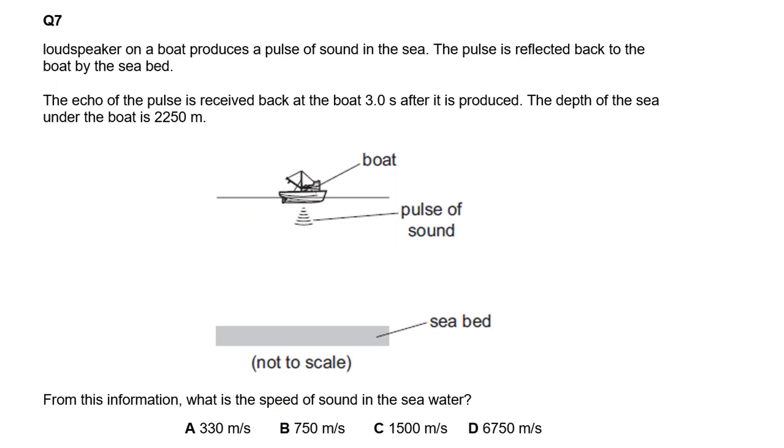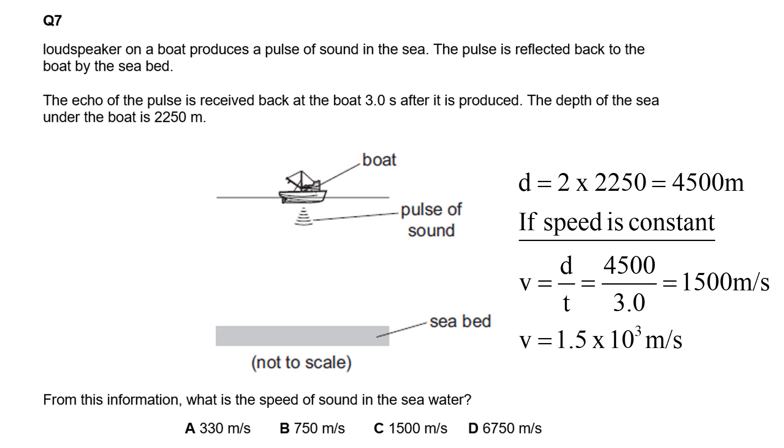A loudspeaker on a boat produces a pulse of sound in the sea. The pulse is reflected back by the sea bed. The echo is received three seconds after it's produced. The depth of the sea is 2250 meters. What is the speed of sound? We work out the total distance traveled by the sound and divide by time. Because it's gone down and back up, it's traveled double the depth, two times 2250. Speed equals distance over time, giving us 1500 or 1.5 times 10 to the three, which is option C.